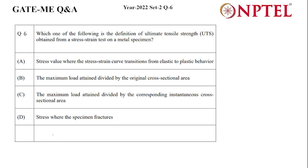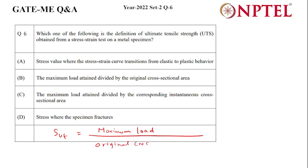We'll write the definition and formula for Ultimate Tensile Strength from a tensile test. S_ut is given as maximum load divided by original cross-sectional area. This is the definition of Ultimate Tensile Strength.